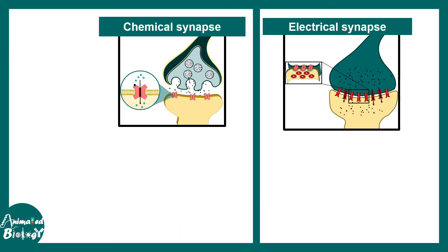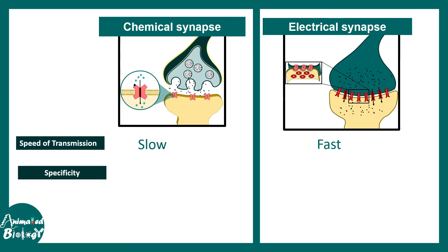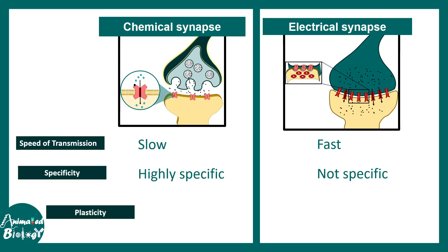Now let us quickly compare between these two synapses. When it comes to speed of transmission, chemical synapses are slow and electrical synapses are very fast. When it comes to specificity, chemical synapses are highly specific, whereas electrical synapses do not show the property of specificity. When it comes to plasticity, chemical synapses are highly plastic, whereas electrical synapses are not plastic.